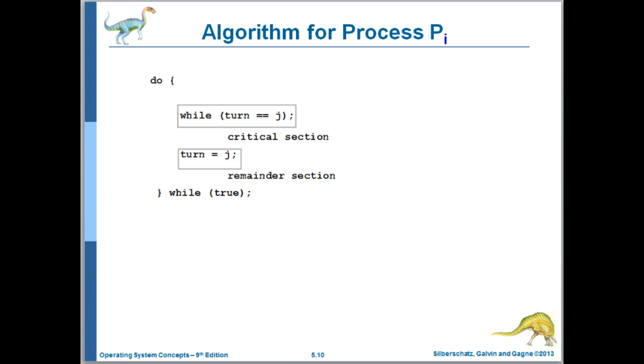So let's go ahead and assume that we're trying to solve the critical section problem for two processes, PI and PJ. Here we see the code for process PI. So they have a shared turn variable that they use to control entry into the critical section. So the code for process PI, if it is J's turn, process PI spins, then presumably PJ is in its critical section.